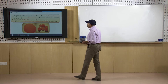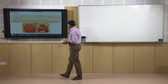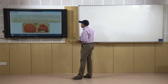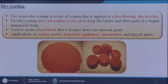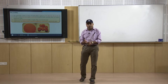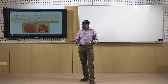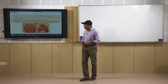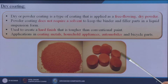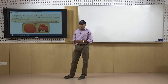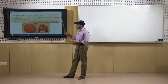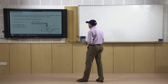The next one is called dry coating. Dry powder coating is a type of coating applied as a free-flowing dry powder. Powder coating does not require a solvent to keep the binder and filler parts in liquid suspension form; it is used to create a hard finish that is tougher than conventional paint. Applications include coating metals, household appliances, automobiles, and bicycle parts. You simply roll or slide the substrate over the dry powder to attach the particles. No heat is applied, which is why it is called the dry coating technique.